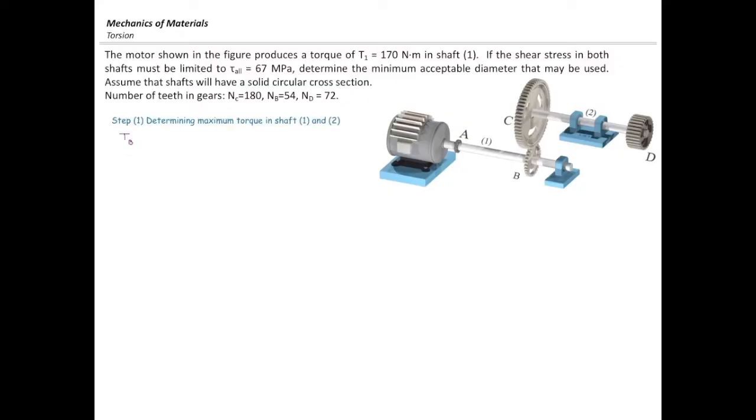All right, torque in gear B would be equal to torque in 1. They are connected together by shaft and that is equal to 170. Torque at 2 would be equal to torque at C.